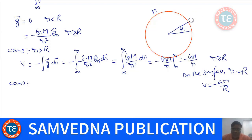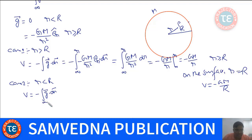Now if we want to find the potential at a point P inside, where R is less than capital R, the journey from infinity to point P has to be broken into two parts: infinity to the surface, and surface to the interior point. This is necessary because the expression for the gravitational field G is different in each region.